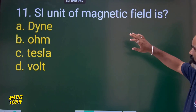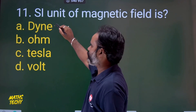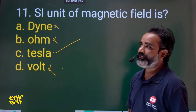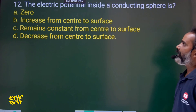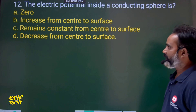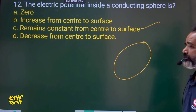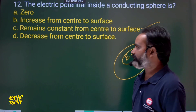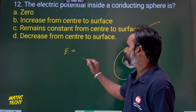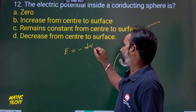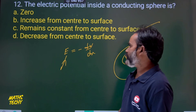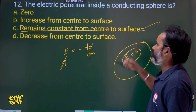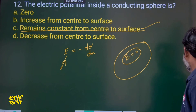Question 11: The CGS unit of magnetic field — option C is the direct answer. Question 12: The electric potential inside a conducting sphere — we know the electric field inside is zero. Using the relation E = −(gradient of V), when E = 0 and we integrate, the potential V equals a constant. So electric potential inside a conducting sphere is constant, option C.